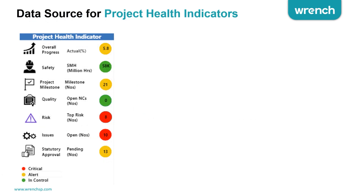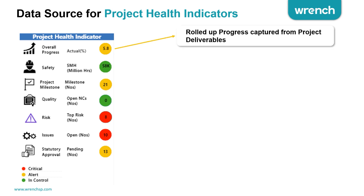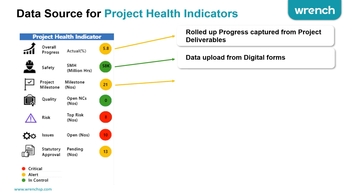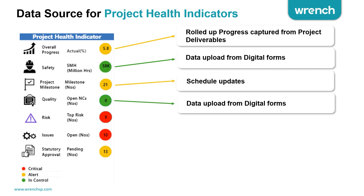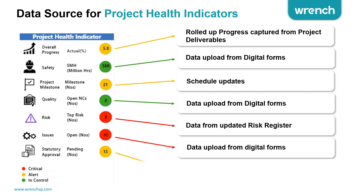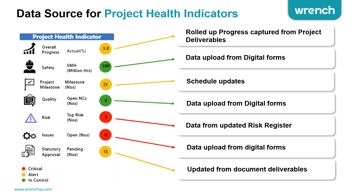The information captured and updated on these health indicators comes from real-time data. Progress is captured by roll-up, safety is captured from digital forms, the project milestones come from schedule updates, and quality, risk, and statutory approvals come from the document list or the drawing list. All information is captured digitally from the source and the status is updated based on that day's information.